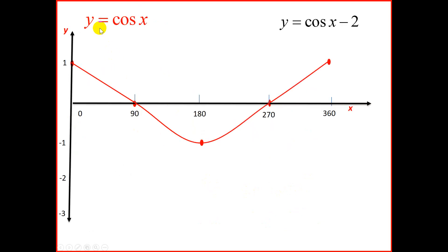Moving on to the cosine graph, y equals cos x. That's drawn for you. And we want to draw y equals cos x minus 2. From our previous slide, you will notice that we said that q affects the graph in terms of vertical movement. This graph will move 2 units down.